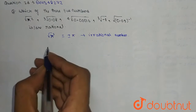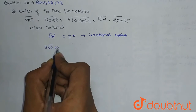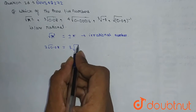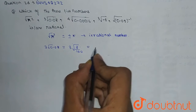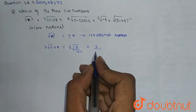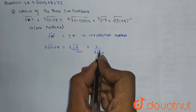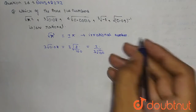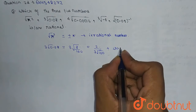Now we check for the fourth root of 0.08. This will be equal to the fourth root of 8 upon 100, which equals 2 upon the fourth root of 100. This number is also irrational.